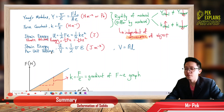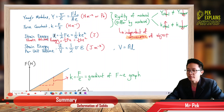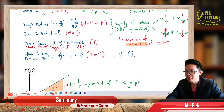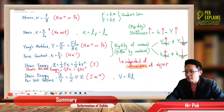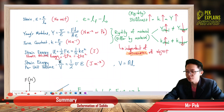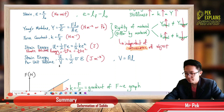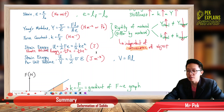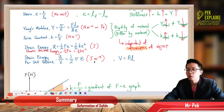Strain energy per unit volume is this strain energy divided by the volume, which equals half stress times strain. The unit for strain energy is Joule, volume is meter cubed, so strain energy per unit volume is Joule per meter cubed.